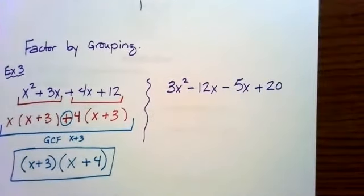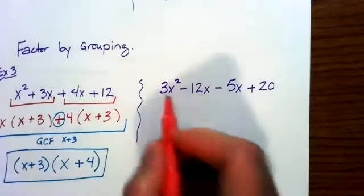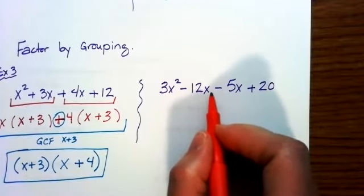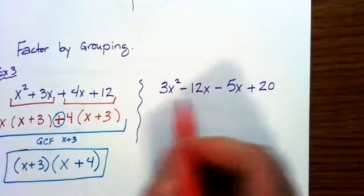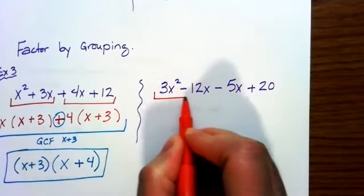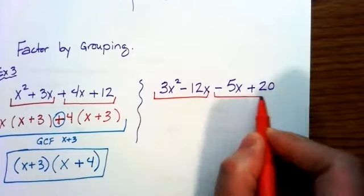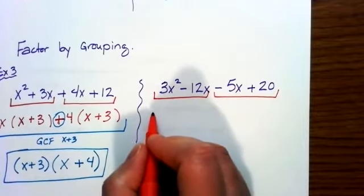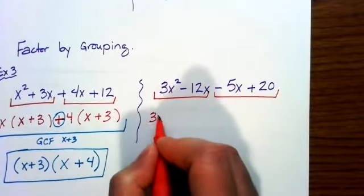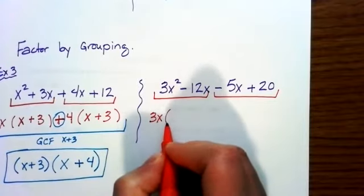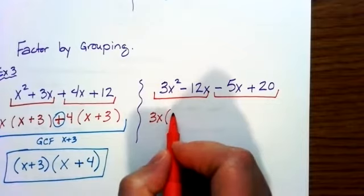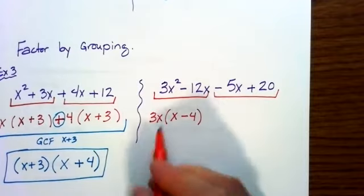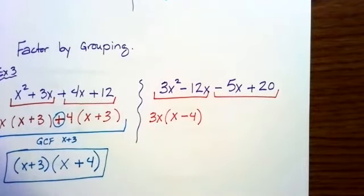Let's see grouping again in the next example with four terms. Note there may be a typo — the third term should be negative 12x. Group the first two terms together and the last two terms together. From the first group, 3 and 12 share a common factor of 3, and both terms have x, so 3x comes out, leaving 3x(x − 4). Check by multiplication to confirm.